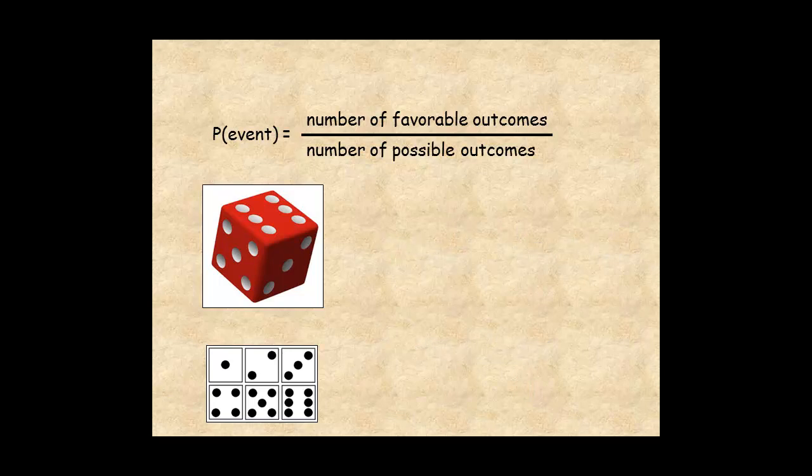For another example, the probability of rolling an even number is 3 over 6, which is 1 half, 50%, or 5 tenths.